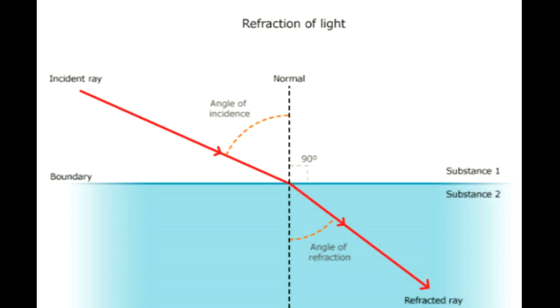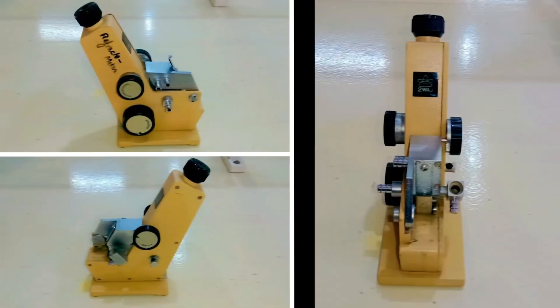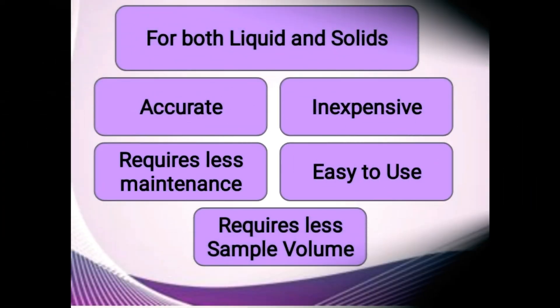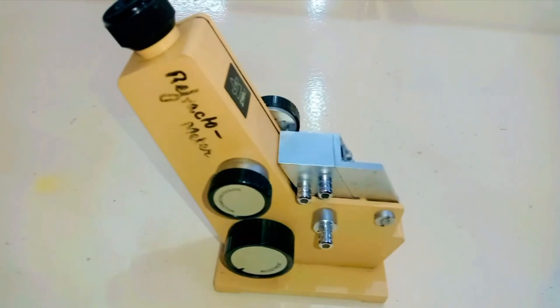In laboratory, we routinely use an Abbe refractometer to measure refractive indices. It is a classical optical instrument used for both liquids and solids. The device is relatively inexpensive, accurate, and requires little maintenance or calibration. It uses small sample volumes and is easy to use. To understand its working principle, let's study parts of a refractometer first.